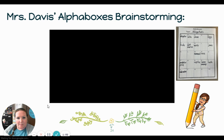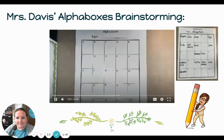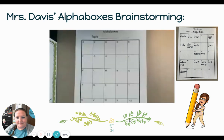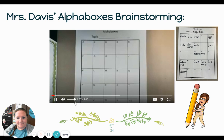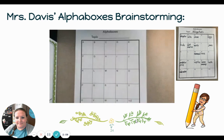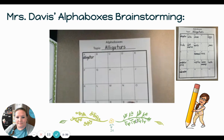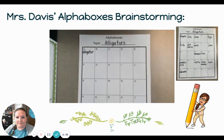Ms. Davis did some brainstorming and made a video. Let's see if it'll play. First graders, here is my alpha boxes page. As you can see, it's got all the letters of the alphabet. Each letter has its own box — they combine Y and Z, as those are some of the harder letters. The first thing you're going to do is decide on your topic. Once you've got your topic chosen, you can add that at the top of your paper. For my next writing, I'm going to write about alligators.